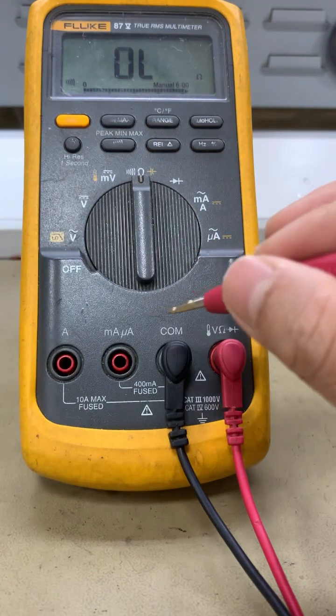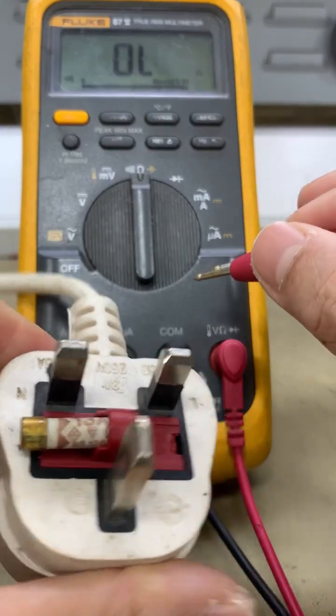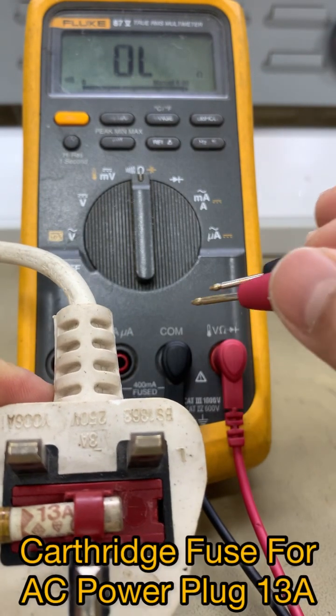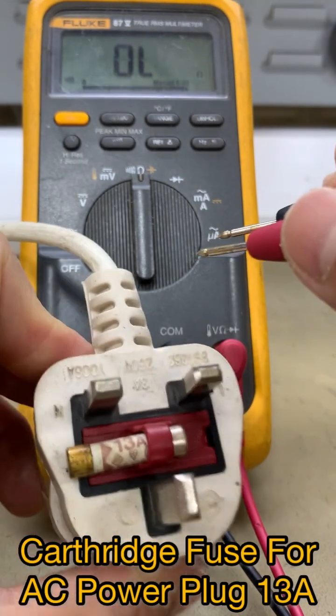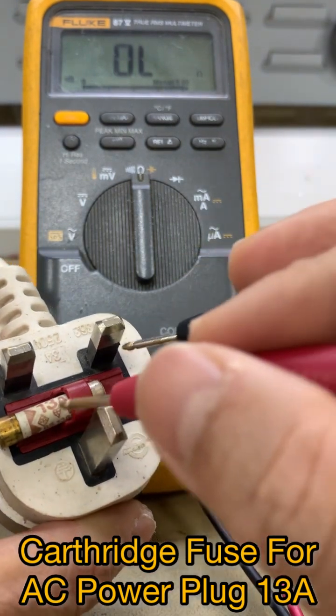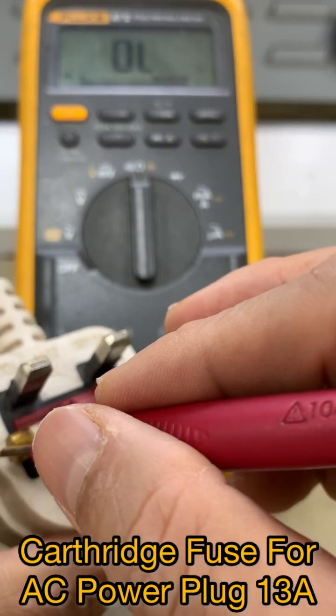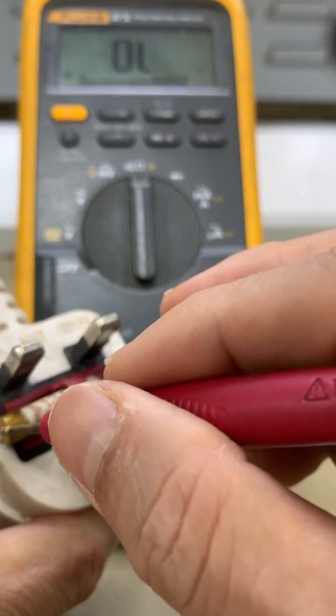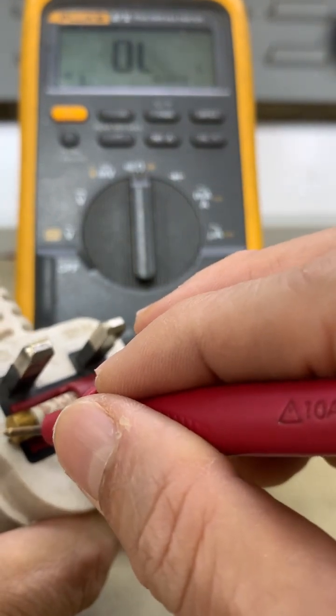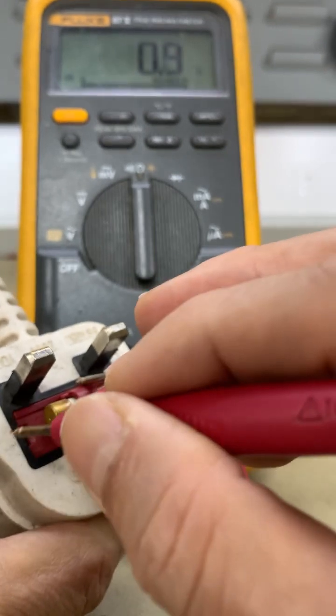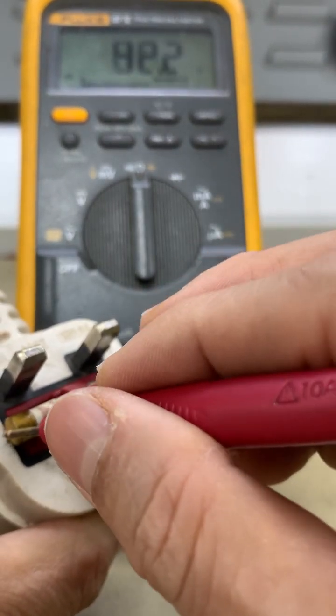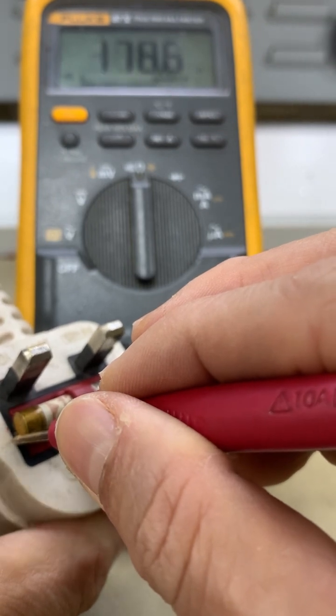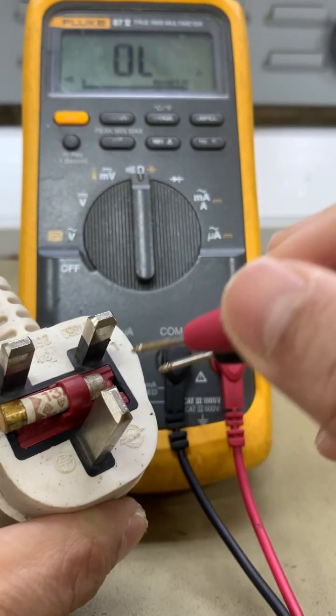Then we have here the small cartridge fuse in the AC plug, the power cord, so we can test this one. So there is a long beep, and the reading is 0.5 to 0.6 ohms. So this fuse is good.